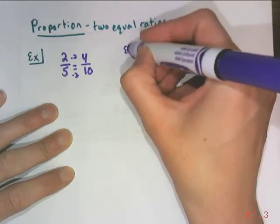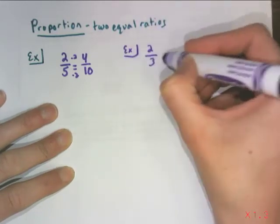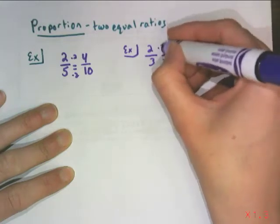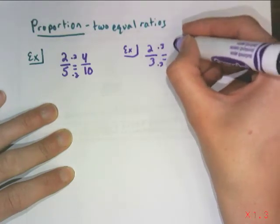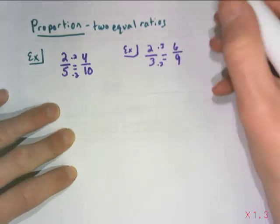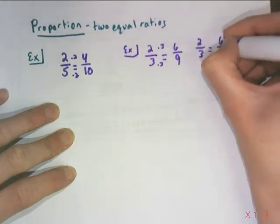Likewise, we could start with a ratio of 2 to 3, and if we triple the top and triple the bottom, we end up with 6 over 9. So 2/3 equals 6/9.